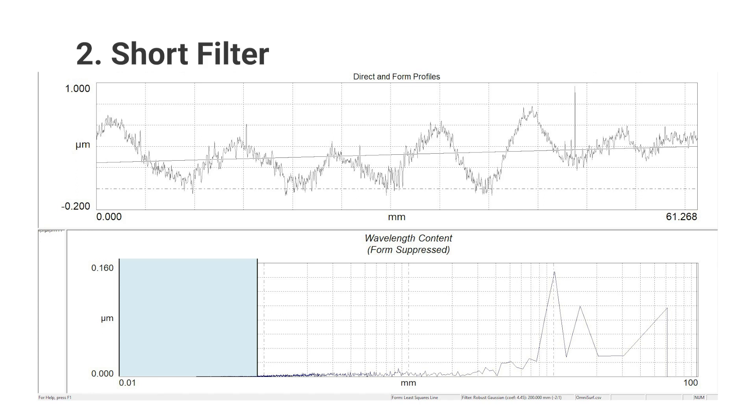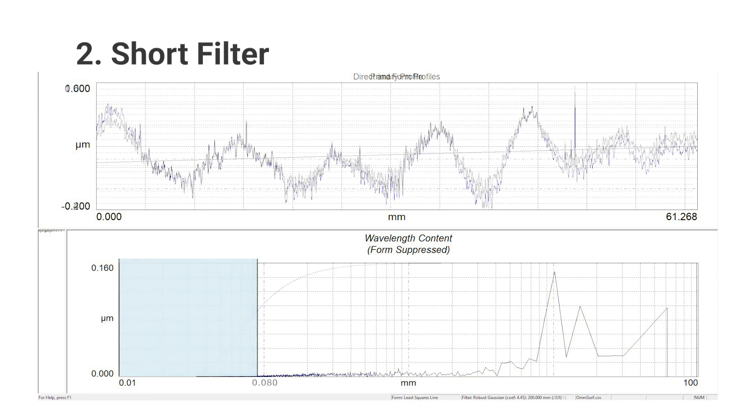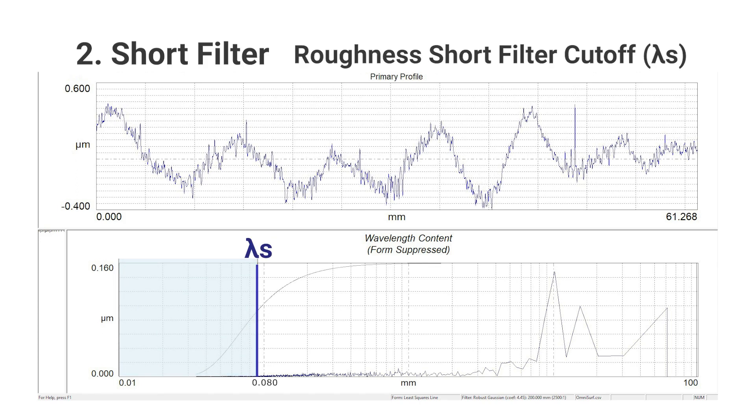This short spatial wavelength filter will be applied at the roughness short filter cutoff wavelength, or lambda s, and this will define one end of our roughness band. Once the short filter is applied, we call the remaining data the primary profile.